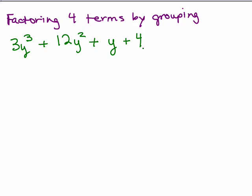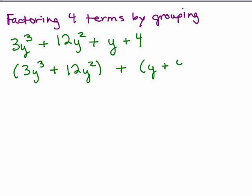Our second method is: we've got four terms, we're going to group them together, so we put two terms together and another two terms together. We'll put the first two terms in a group, plus the second two terms in another group. If you have minus signs anywhere, you have to be very careful and remember to put the plus sign between the two parentheses.